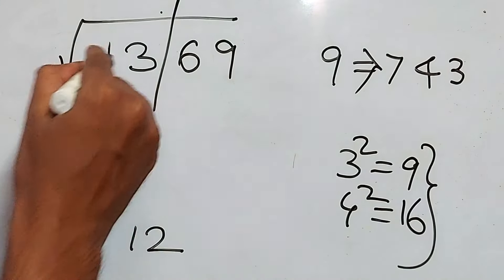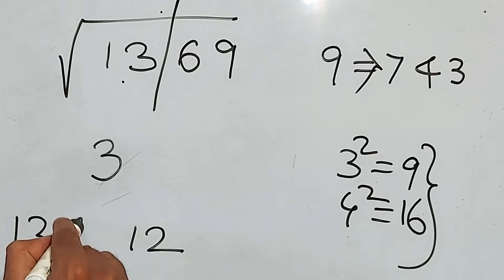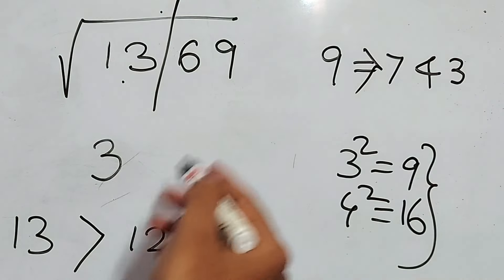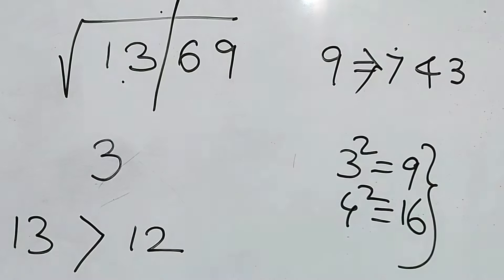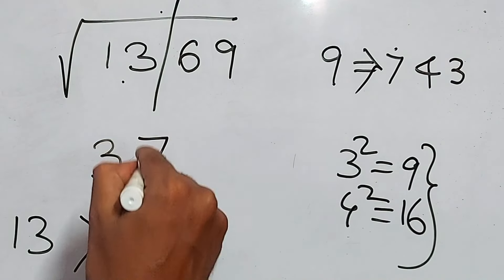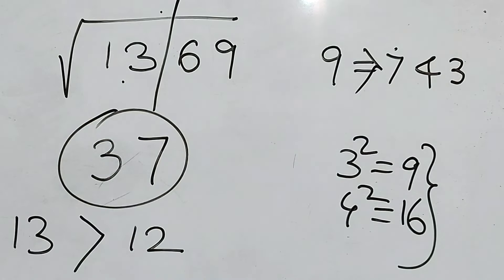Now, 13 is again greater than this 12. So we have to take the greater number, that is 7. So the answer is 37. This is your final answer. Simple, my friend. Just try this. You'll be more than happy.